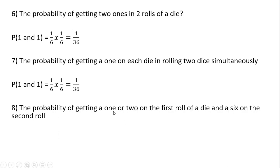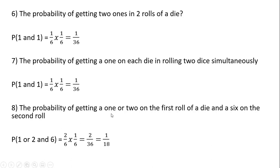The probability of getting a one or two on the first roll of a die and a six on the second roll. Getting a one or two is two out of six. The probability of getting any single number on the second roll is one-sixth. Multiplying these together gives an answer of one over 18.